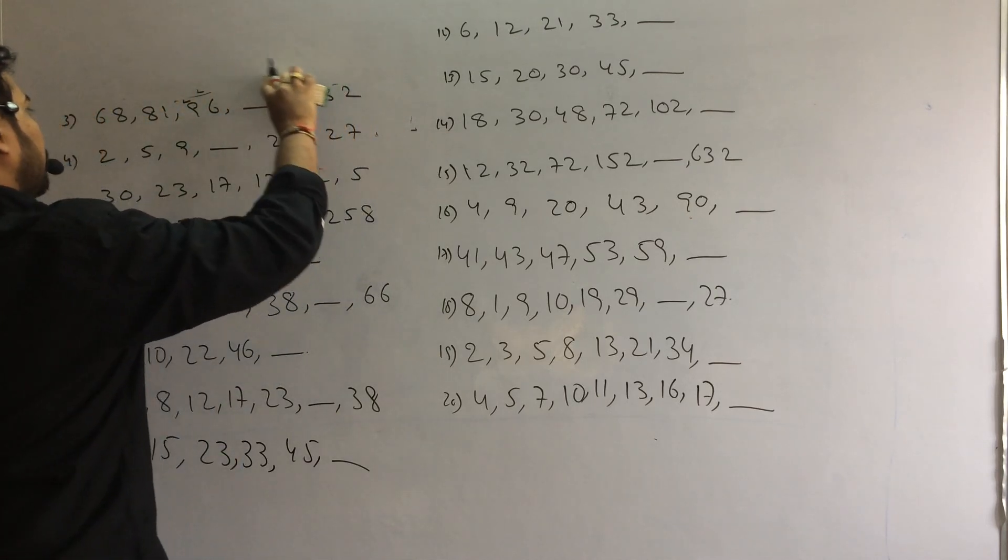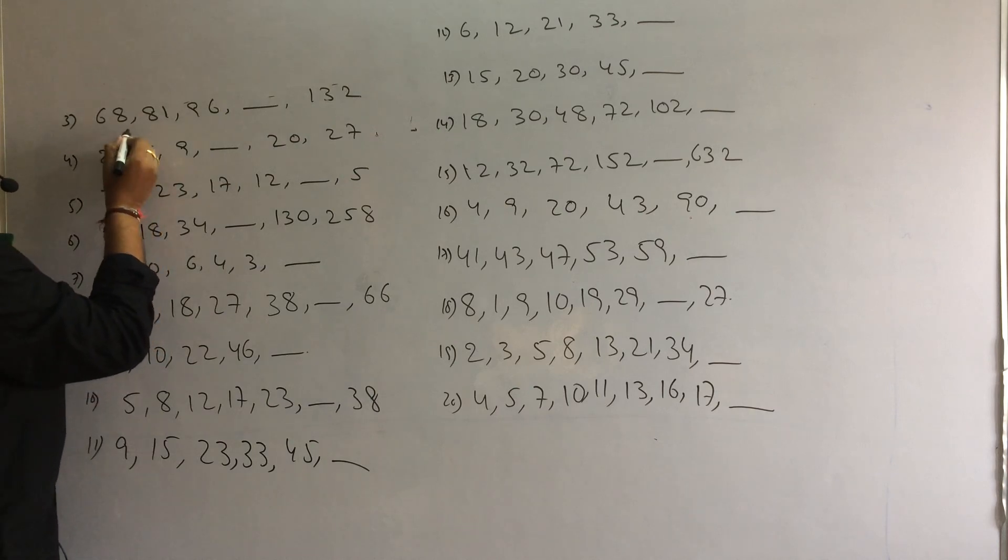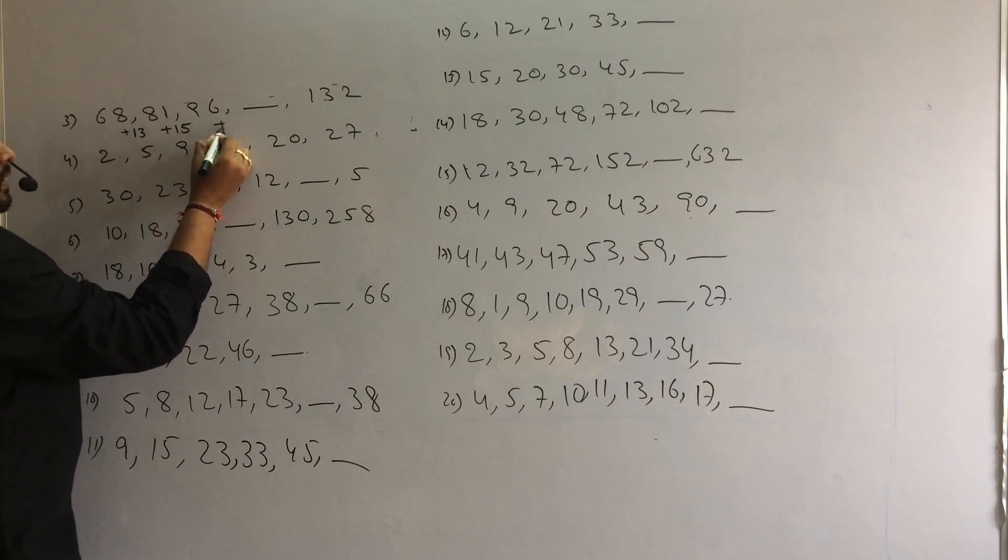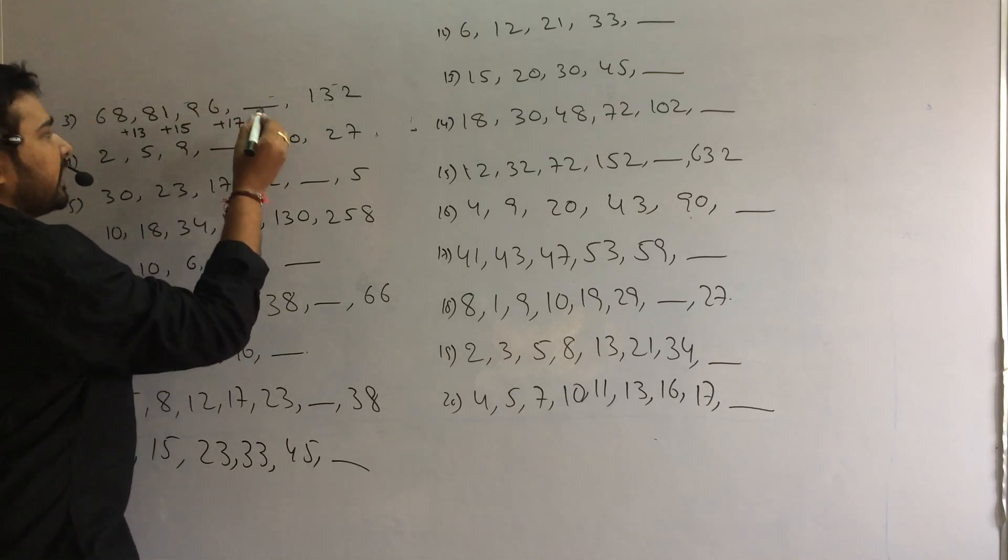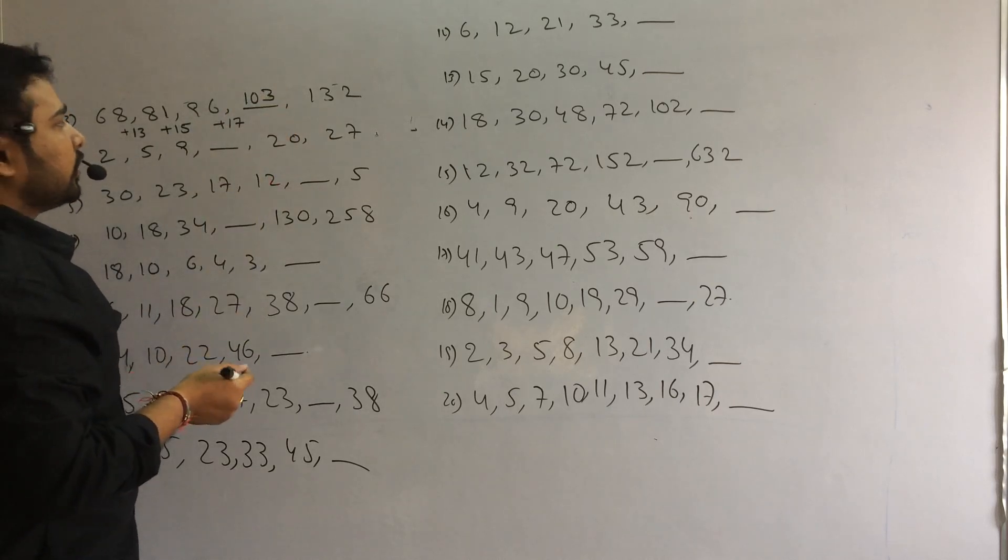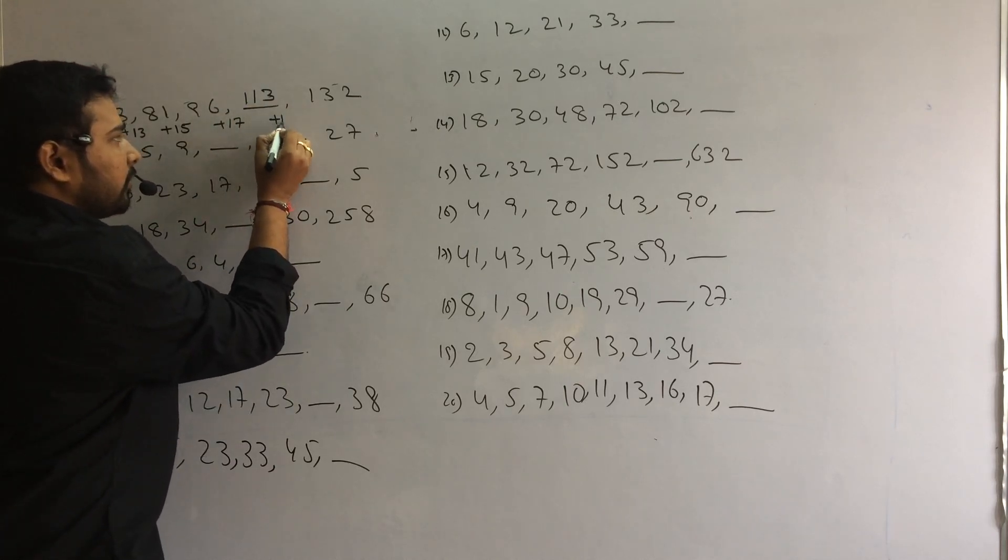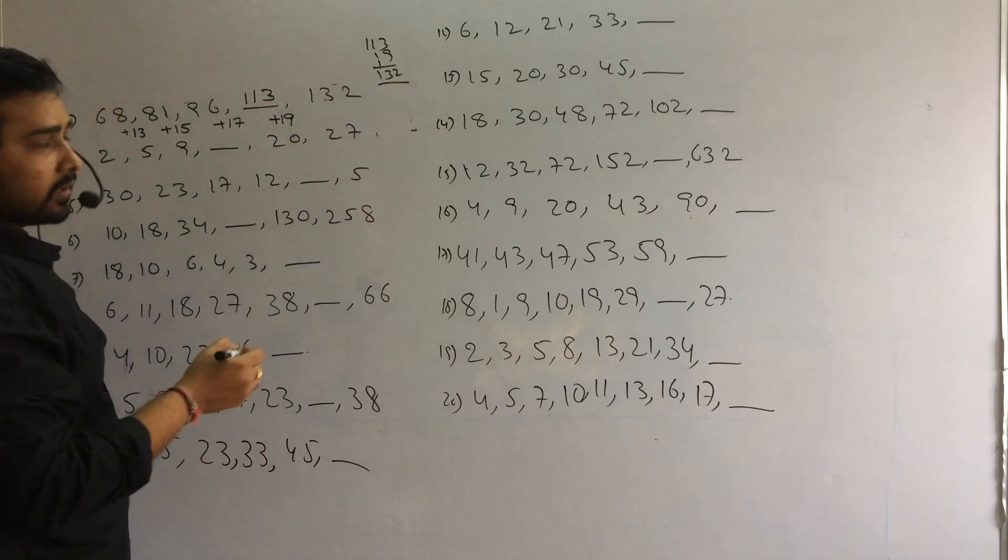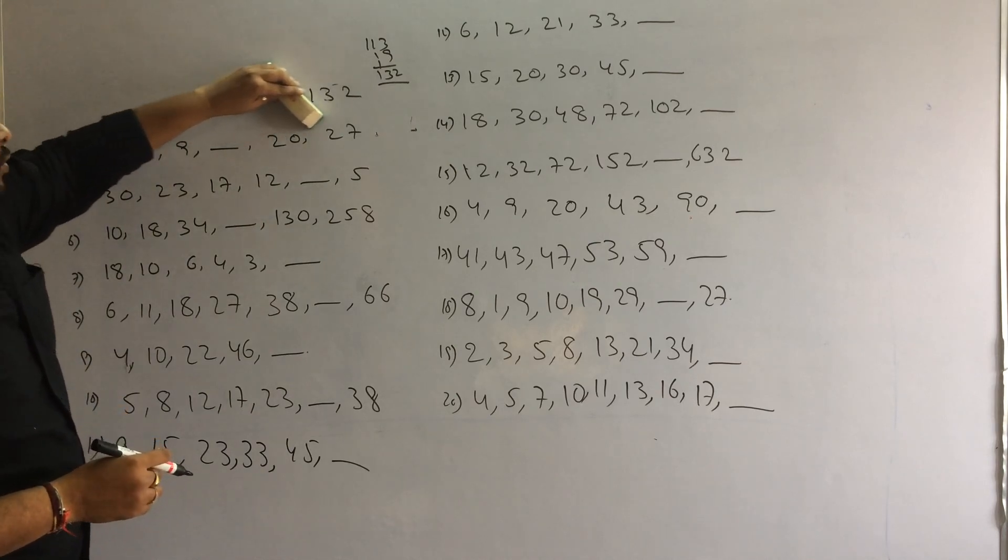Next problem. Third problem, the difference is very normal. Difference is 61, 71, 78, plus 3, 81. Plus 15. 13, 15. After 15, next what number? 17. If I add 17 to 96, answer 113. Next to 17, next odd number, 19. If I add 19 to 113, next answer is 132. So my answer is 113. Logically, odd numbers in increasing order. That's my answer.